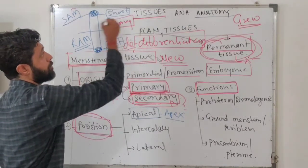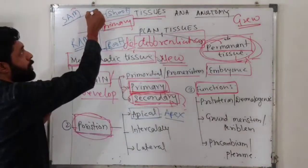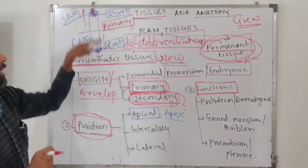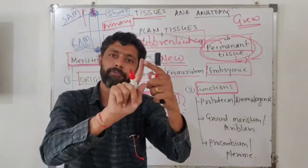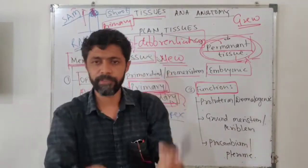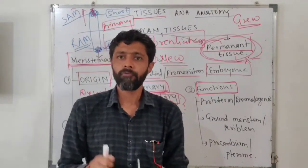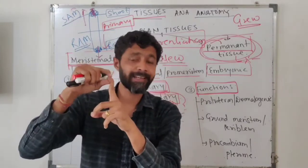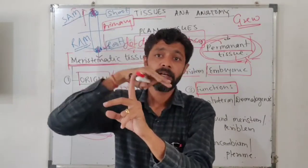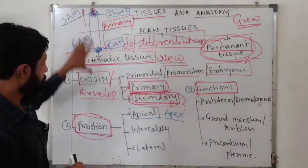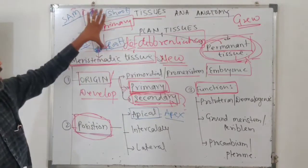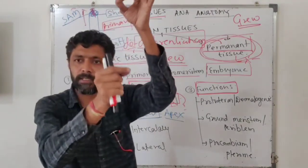Primary growth means increase in the length of the plant axis. The shoot apical meristeme causes the plant axis to grow upward and the root apical meristeme causes the root to grow deeper. If you remove the shoot tip, the axis will not grow vertically — the height of the plant will be stunted. Apical meristeme is responsible for primary growth.